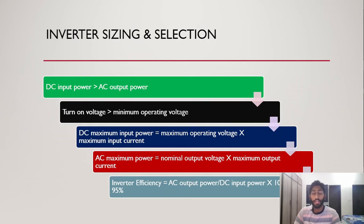The DC maximum input power - if you want to calculate that, you multiply the maximum operating voltage range by the maximum input current in the DC specification. For the AC maximum power output, you multiply the nominal output voltage - let's say if it's 240 volts - by the maximum upper current that the inverter will produce.